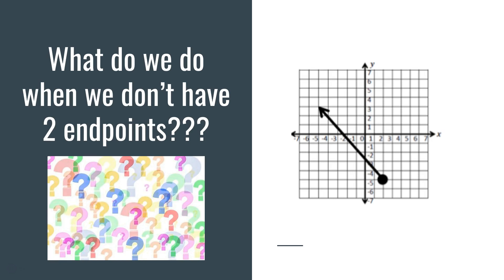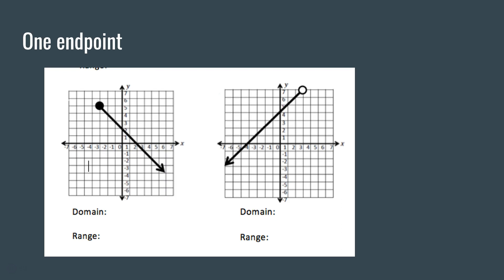Let's look at a few special cases. What do we do when we don't have two endpoints — say we only have one endpoint? We identify that endpoint; for example, we can draw our domain line at negative 3. Since the x values just increase from there and the graph never stops going right, the domain is x is greater than or equal to negative 3 (the point is filled in, so it's included). For the range, looking from bottom to top, the maximum point is at y equals 5, and the graph heads downward, so the range is y is less than or equal to 5.